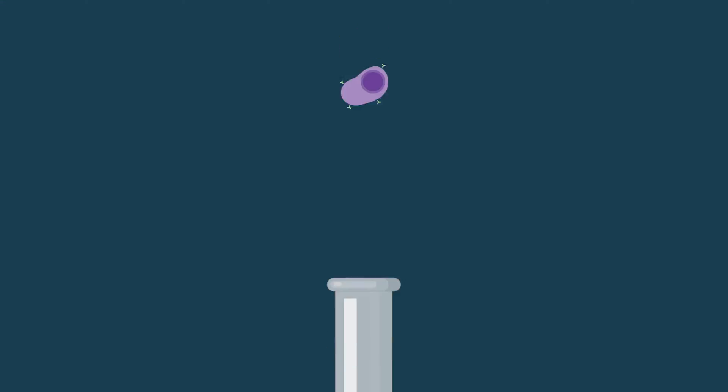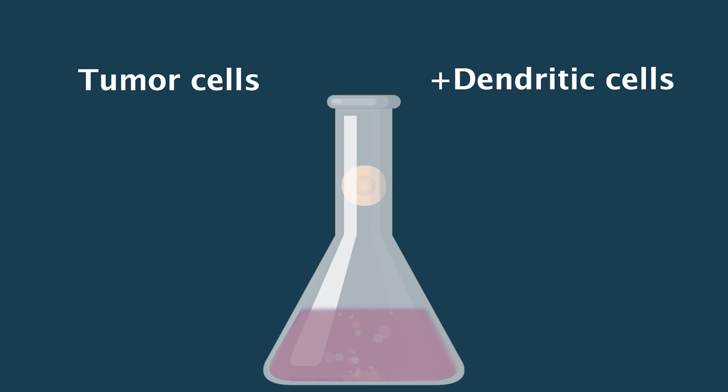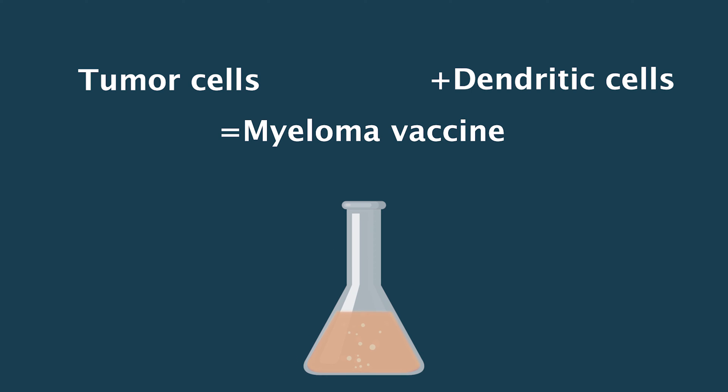In the example of what we've been working on, what we do is we take tumor cells from a patient and we mix them or fuse them together with powerful teachers of the immune system called dendritic cells. Those dendritic cells, which normally live inside of us, can also be grown outside the body. So we take the patient's tumor, we take their dendritic cells, and we incubate them together with a special molecule that dissolves their membranes and then allows them to reform.